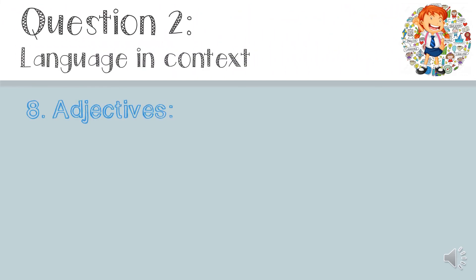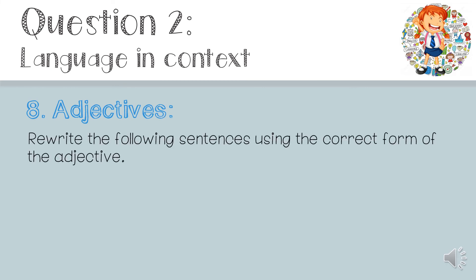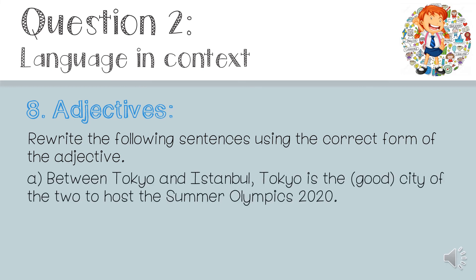The last question: adjectives. Rewrite the following sentences using the correct form of the adjective. Number A: 'Between Tokyo and Istanbul, Tokyo is the good city of the two to host the Summer Olympics 2020.' When dealing with adjectives, we're searching for either a comparative or superlative adjective. We must distinguish: is the comparison between two things or more than two? In this case, two — Tokyo and Istanbul — so we use the comparative form. The comparative form of 'good' is 'better', so the sentence reads: 'Between Tokyo and Istanbul, Tokyo is the better city of the two to host the Summer Olympics 2020.'